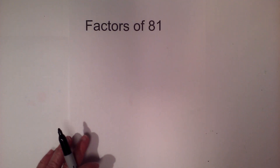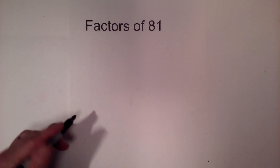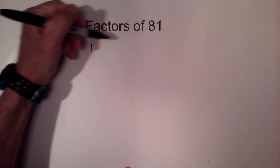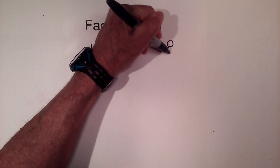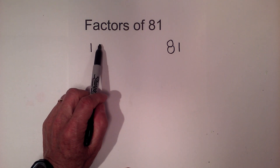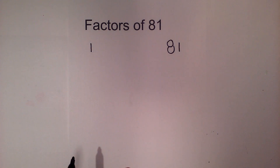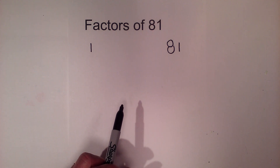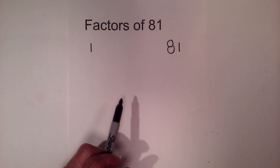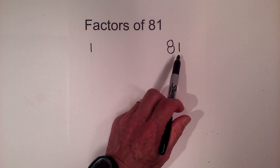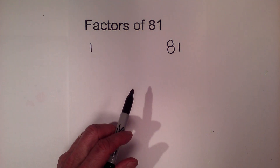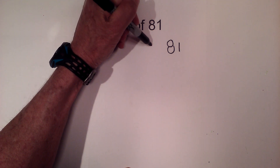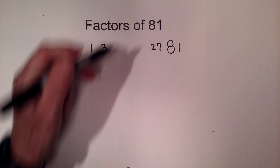Let's try to find the factors of 81. The way I like to find factors of a number is I go 1 times the original number, which is 81, and then I try to find all the numbers in between that multiply together to equal 81. So let's start with 2 — does 2 go into 81? No, it does not end in an even number. Will 3 go into 81? Yes, 3 goes into 81 27 times.